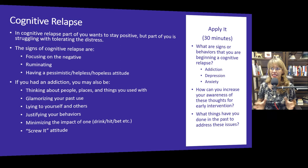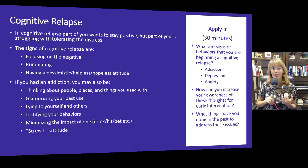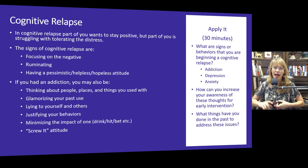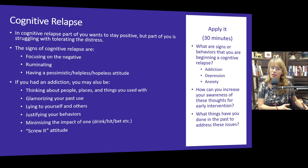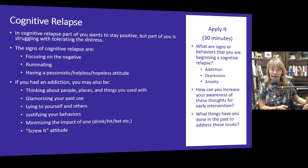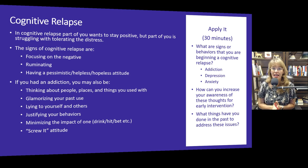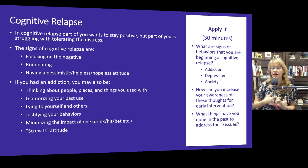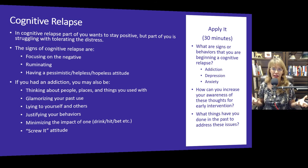Spend about 30 minutes thinking about what are the signs or behaviors that indicate you're beginning a cognitive relapse, as it applies to your addiction, your depression, or your anxiety. How can you increase your awareness of these thoughts for early intervention? Sometimes before an addiction relapse, there's a depression relapse or an anger relapse. It's really important to catch these things early so you can ask yourself what's causing this and what can I do to improve the next moment and get back headed in the right direction. What things have you done in the past to address thoughts that contribute to feeling angry, helpless, or hopeless — for example, eliminating all-or-none thinking or finding exceptions?